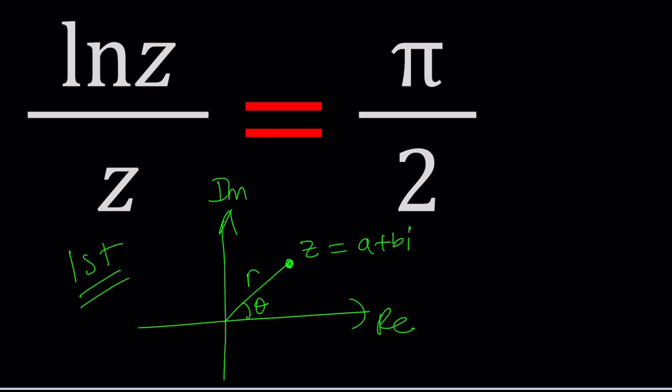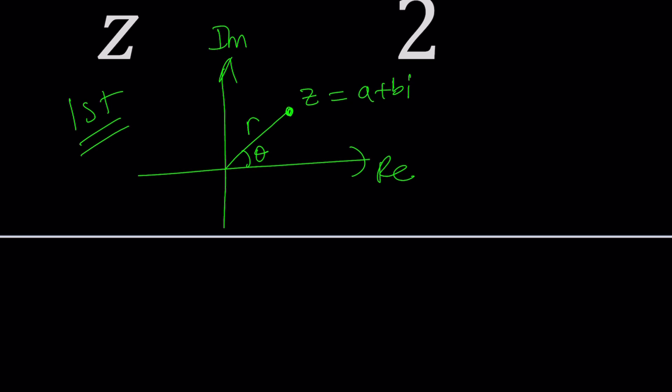You hopefully know that. And also, we can write in polar form. Here's how the polar form works. We can write Z as R times cosine θ plus i sine θ.